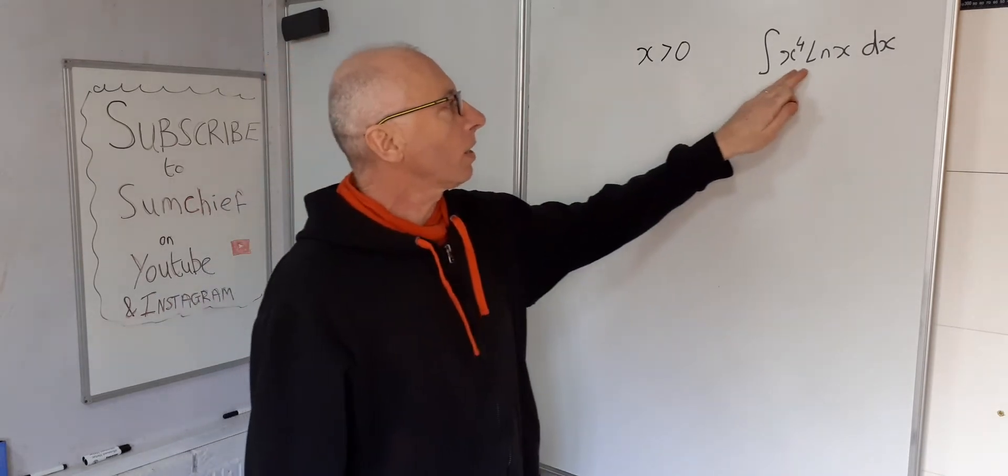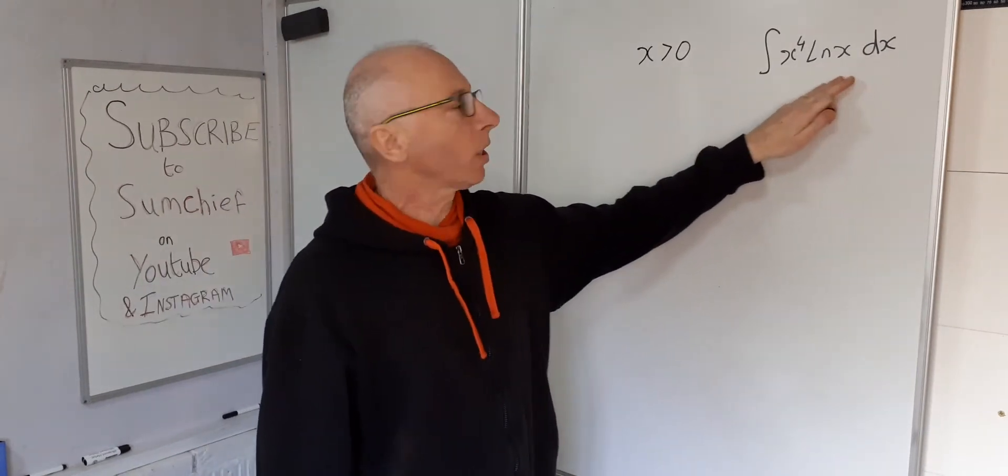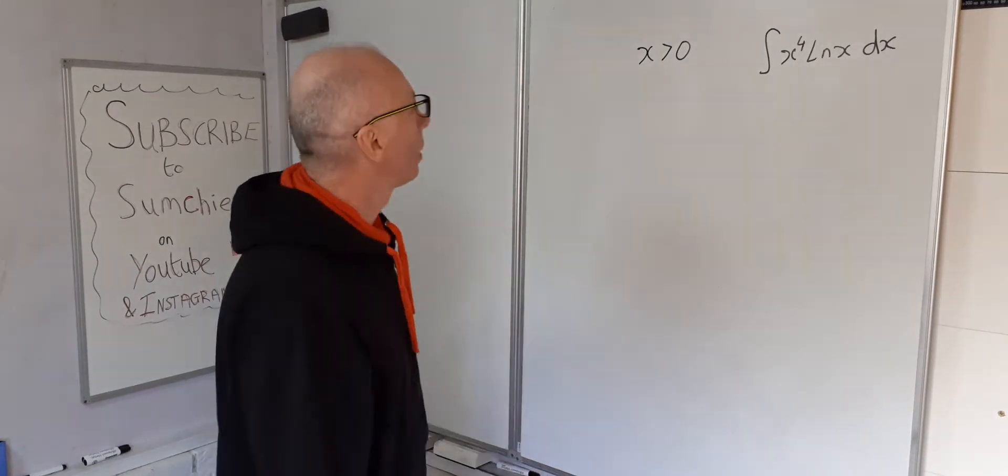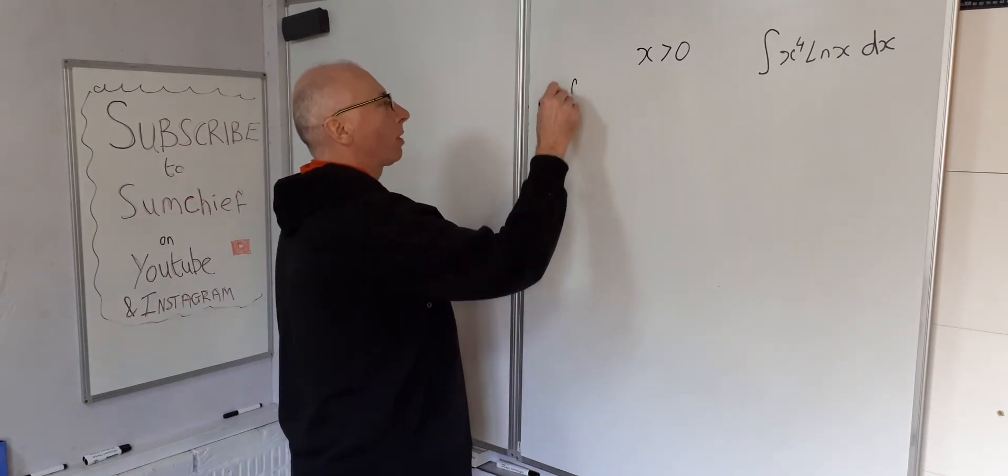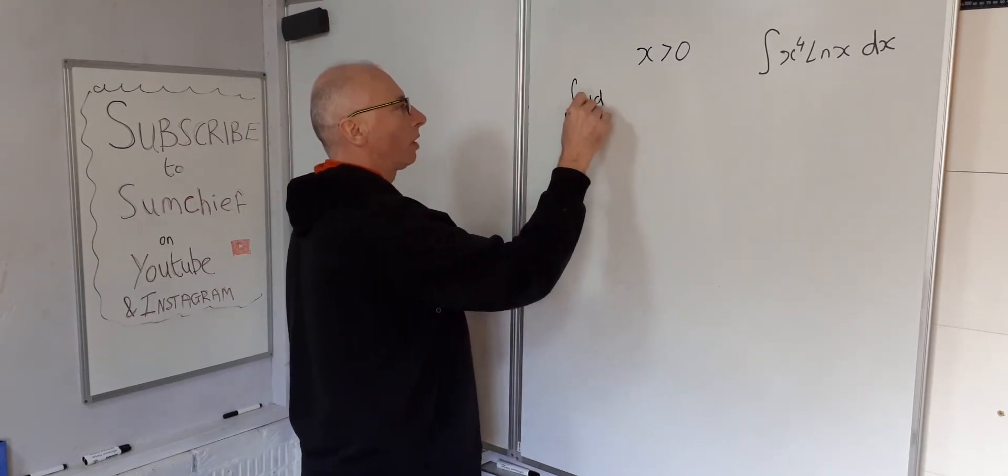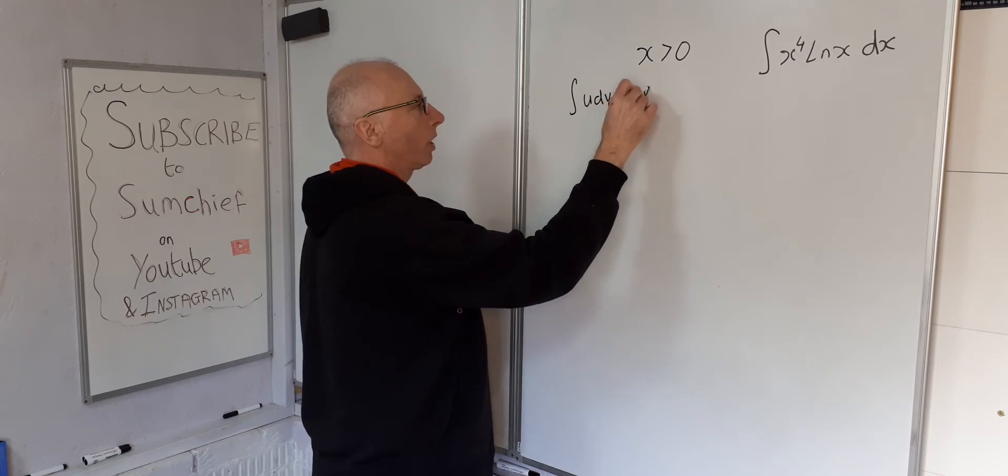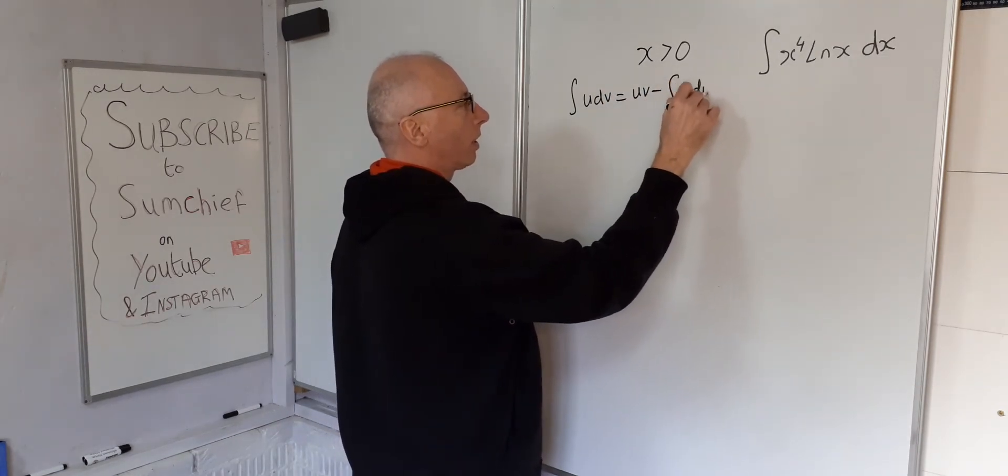Okay, so x to the 4 ln of x. So what we're looking at here, integration by parts. So integration by parts, usual business, u dv equals uv minus integral of v du.